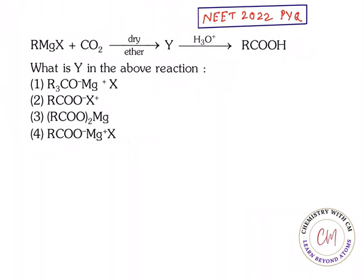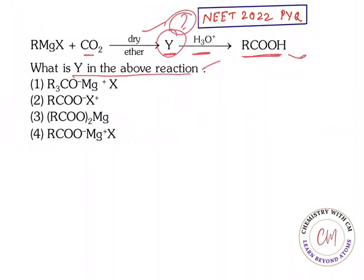So let us see the question. What is the question here? RMgX on treatment with carbon dioxide in dry ether gives rise to Y, and this Y on hydrolysis gives rise to carboxylic acid. So what is Y in the above reaction? You need to find Y.